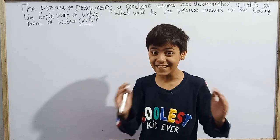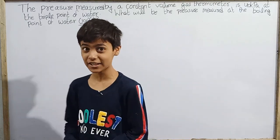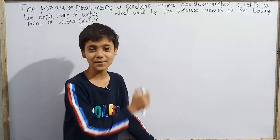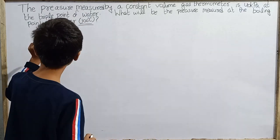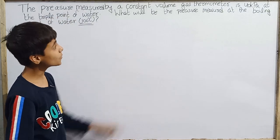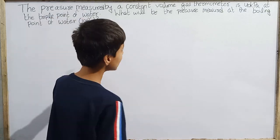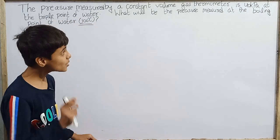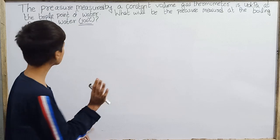Hello everyone and welcome back to Eskewana Kids. We are back again with a new question on demand, and this question is also from thermodynamics. Today's question is that the pressure measured by a constant volume gas thermometer is 40 kilopascals at the triple point of water.